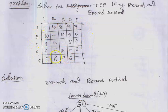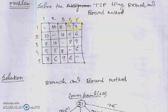The matrix given for the problem represents travel costs: if you move from city 1 to city 2, the cost is 10 hours; from city 1 to city 3 it is 8 hours; from city 1 to city 4 it is 9 hours; from city 1 to city 5 it is 7 hours. The matrix is symmetric, meaning it is an undirected graph — you can move along a road in either direction.